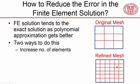You'll have four times the number of elements, which means you're representing the temperature field as a superposition of 36 polynomials, whereas before it was a combination of only nine polynomials. So clearly, dividing into 36 polynomials is better than using nine.